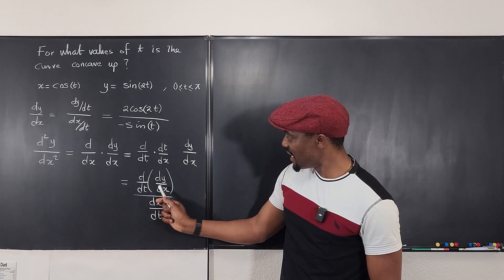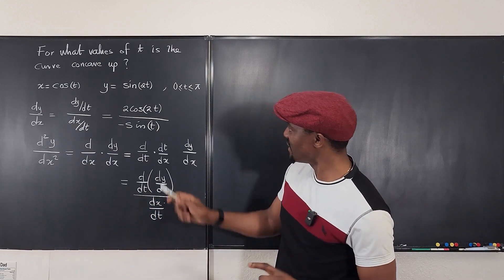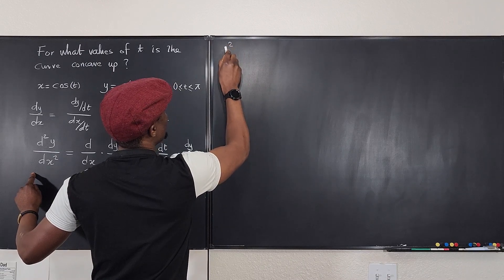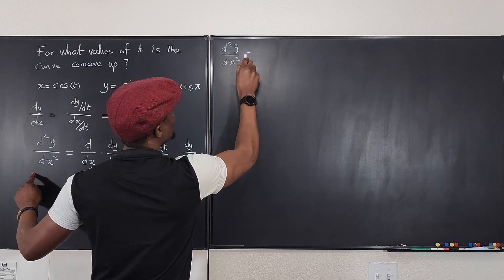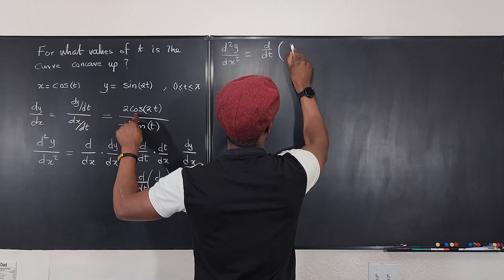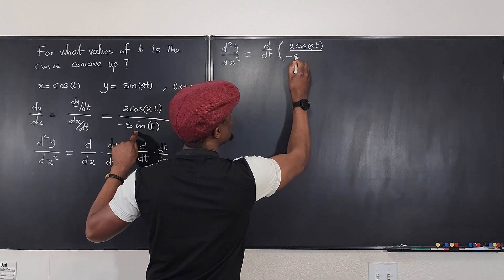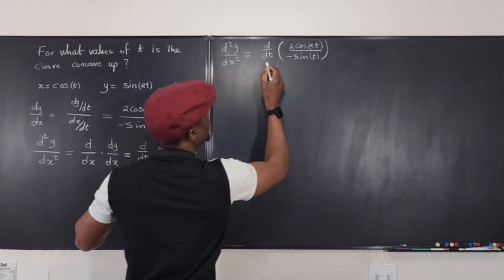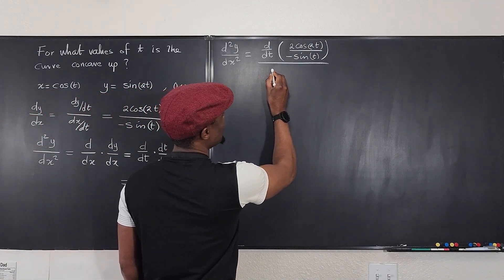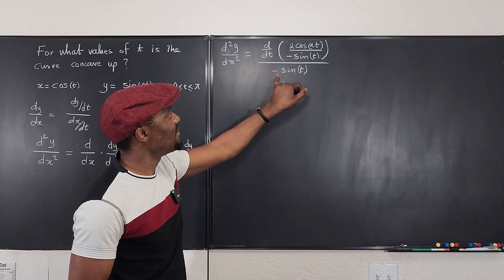We already know dx/dt — it's negative sine t. Now we need to take the derivative of dy/dx with respect to t one more time. Our dy/dx is 2 cosine 2t divided by negative sine t. So d²y/dx² equals d/dt of (2 cosine 2t over negative sine t), all divided by negative sine t. We'll apply the quotient rule to differentiate the numerator expression.